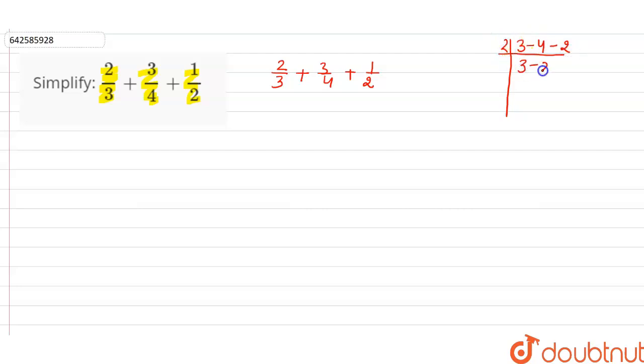So, 2 into 3 as it is, 2 into 2 is 4, 2 into 1 is 2. Then 2 into 1 is 2, 1 and 3 as it is, then 3 into 1 is 3. So the LCM will be 2 into 2 is 4, 4 into 3 is 12. So the LCM of 3, 4 and 2 will be equal to 12.